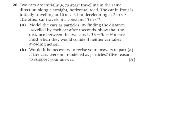What's going on? Two cars are initially 36 meters apart traveling in the same direction along a straight horizontal road. The car in front is initially traveling at 10 meters per second but decelerating at 2 meters per second squared. The other car travels at a constant velocity of 15 meters per second.